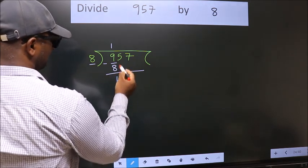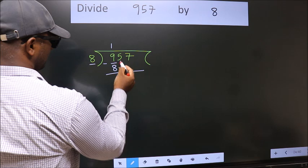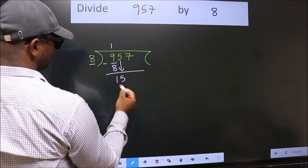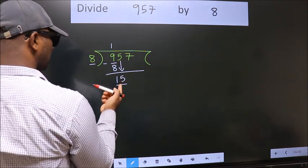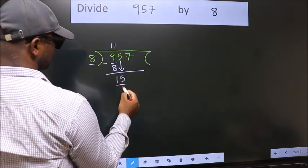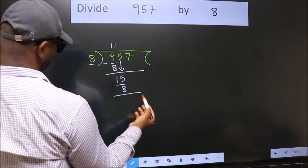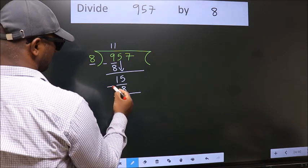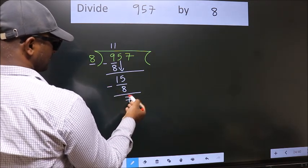After this, bring down the beside number. So 5 down, so 15. A number close to 15 in the 8 table is 8 once 8. Now we subtract, we get 7.